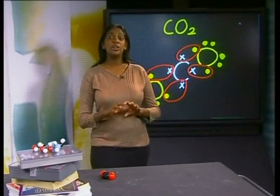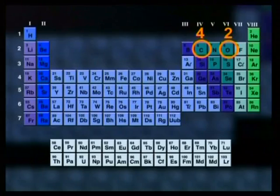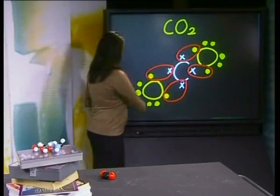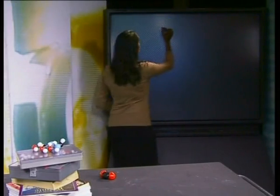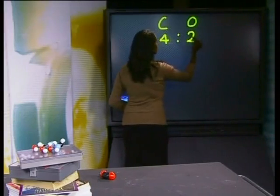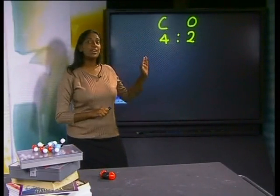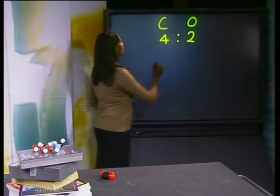Now, let's check if we can use valencies to work out the chemical formula for this gas. Carbon is in group 4 and has a valency of 4. Oxygen is in group 6 and so has a valency of 2. Remember that the valencies help us to work out the ratio of atoms in each compound. In this case, the ratio of the valency of carbon to the valency of oxygen is 4 is to 2. But chemical formula must be written in the simplest ratio. The ratio of 4 is to 2 can be simplified to 2 is to 1.